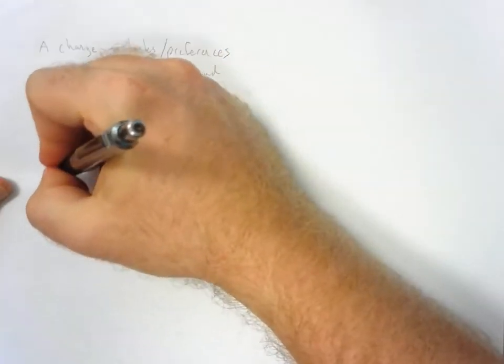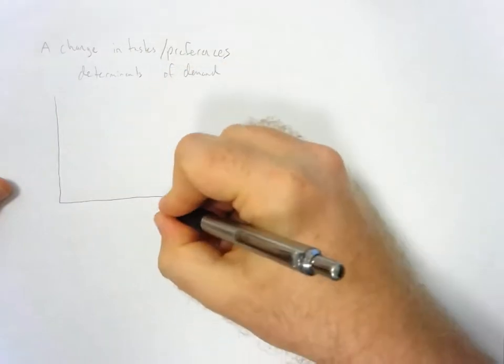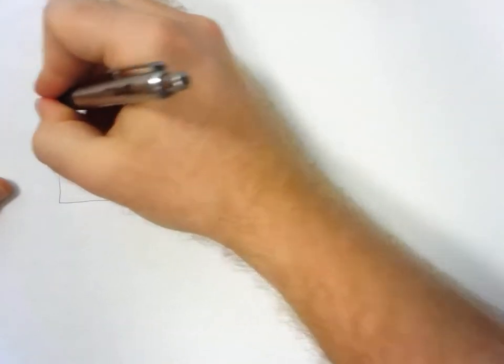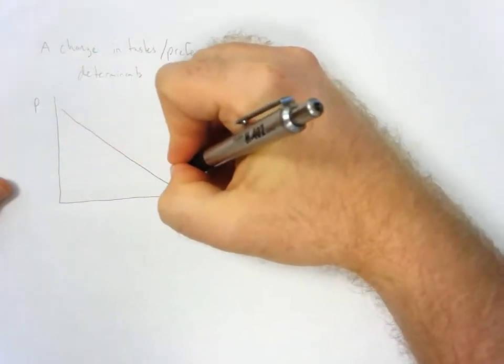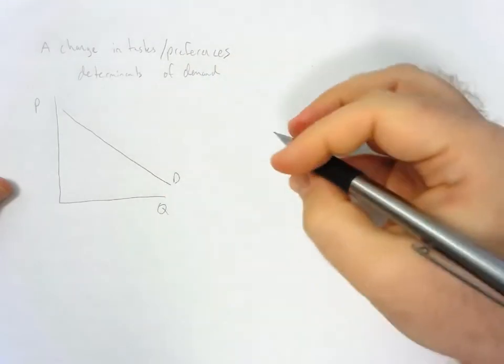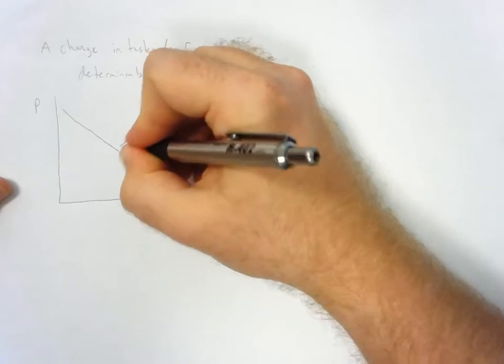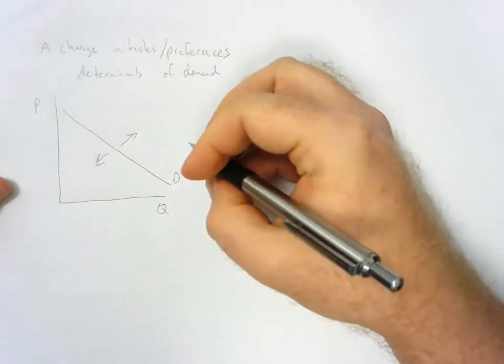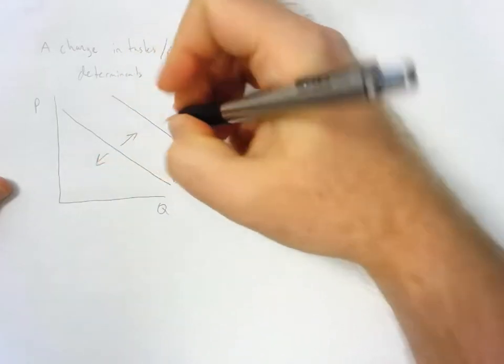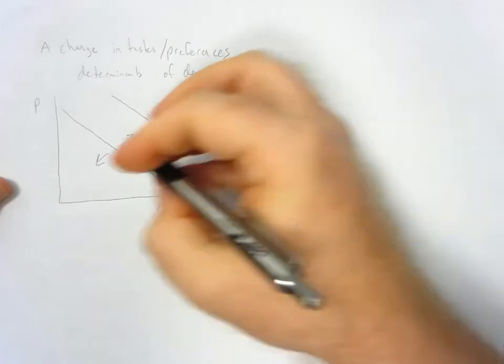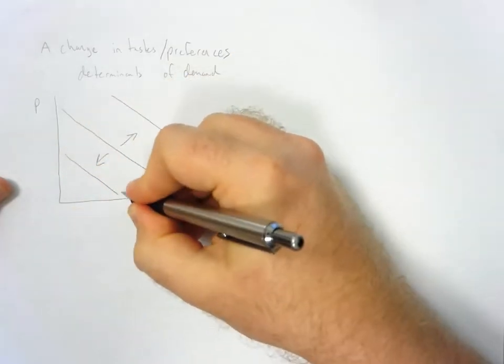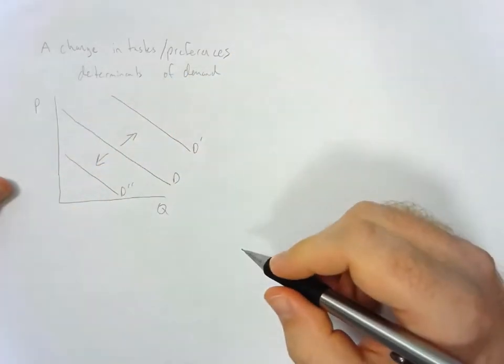We want to look at our classic demand curve, just like that. And if we see a change in taste and preferences, then we're going to see demand shift either left or right. It could potentially increase, or the demand curve could shift left, which shows us a decrease in demand.